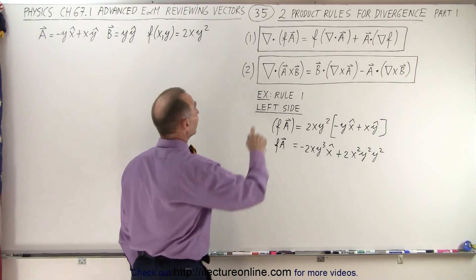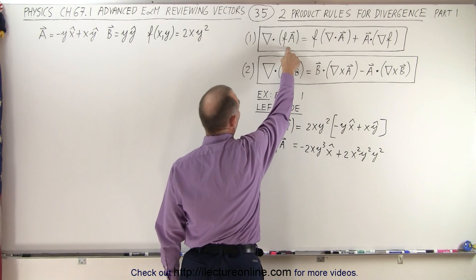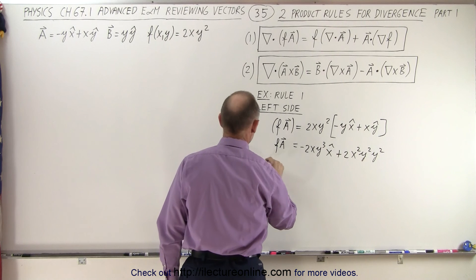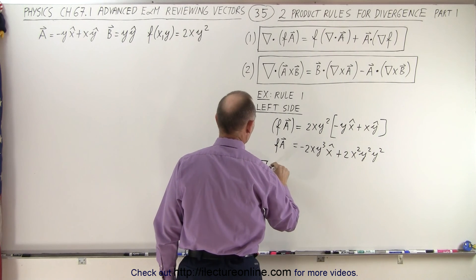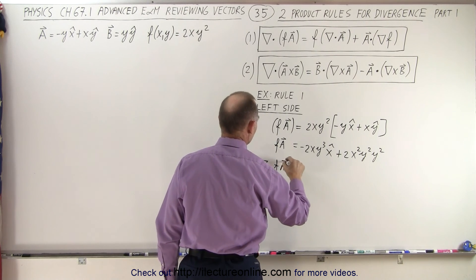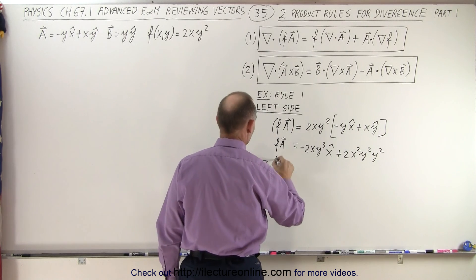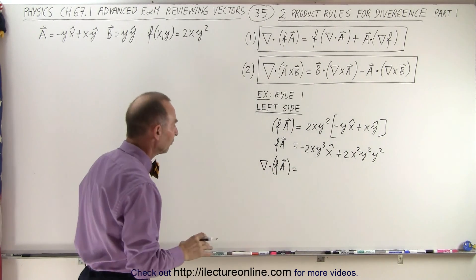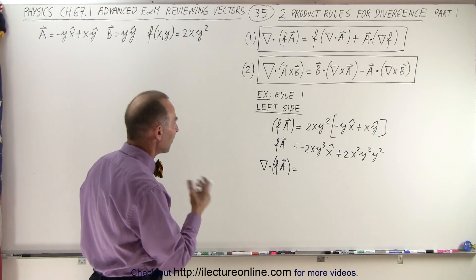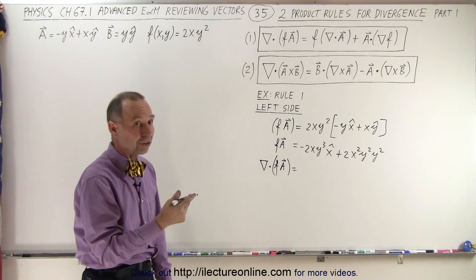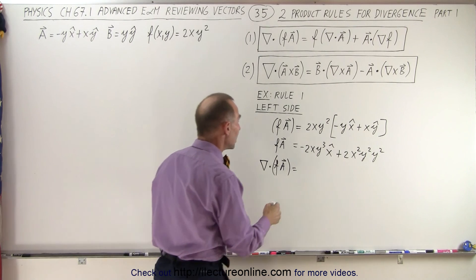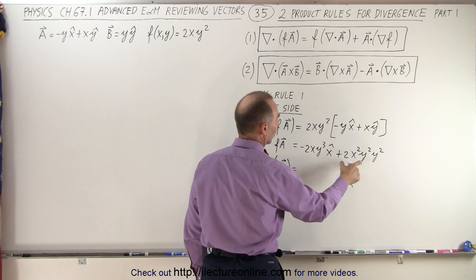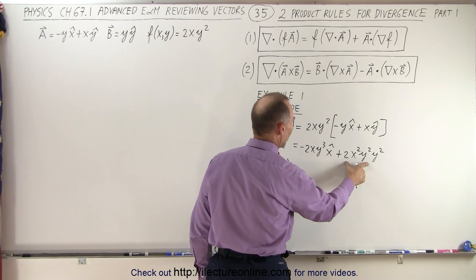Now we're going to take the del operator operating on that product — the divergence of fA. The divergence of a vector is a scalar quantity. It's going to be the partial derivative with respect to x of the first term, plus the partial derivative with respect to y of the second term.